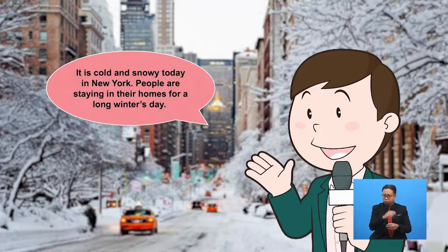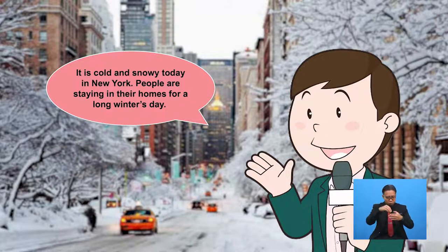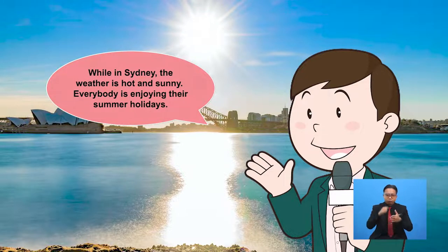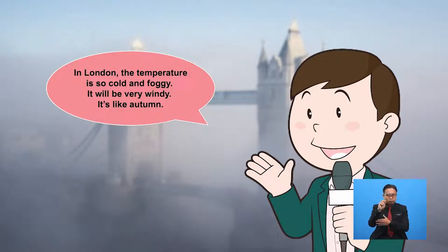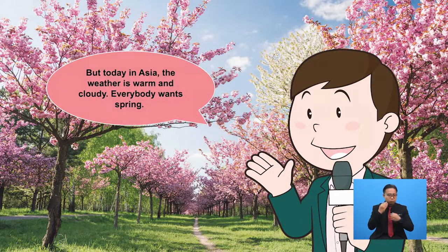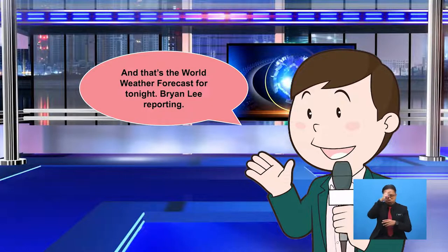Good evening. Welcome to the World Weather Forecast. Let's take a look at the weather now. It is cold and snowy today in New York — people are staying in their homes for a long winter's day. While in Sydney, the weather is hot and sunny and everybody is enjoying their summer holidays. In London, the temperature is cold and foggy, and it will be very windy — it's like autumn. In Asia, the weather is warm and cloudy — everybody wants spring. And that's the World Weather Forecast for tonight. Brian Lee reporting.